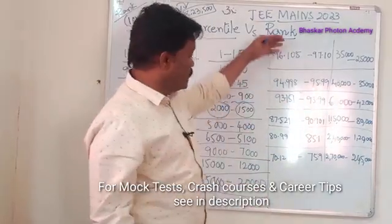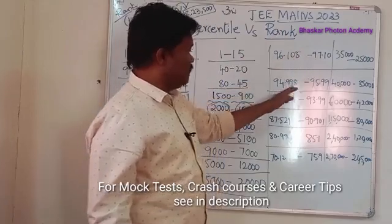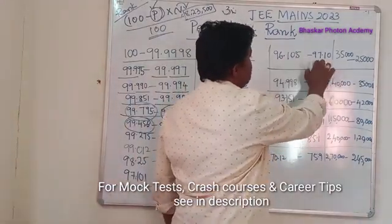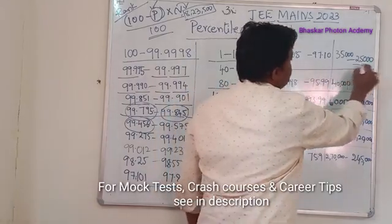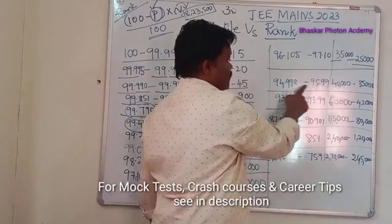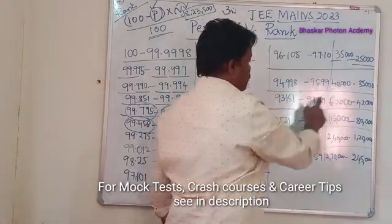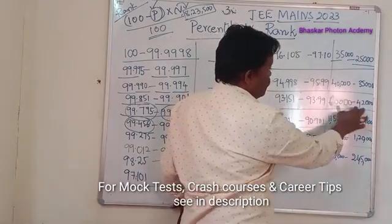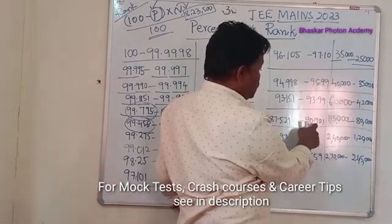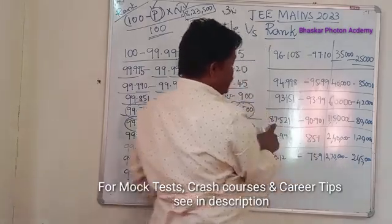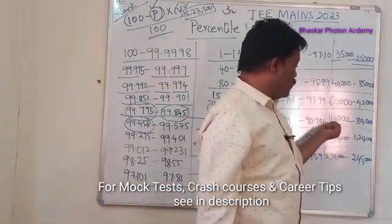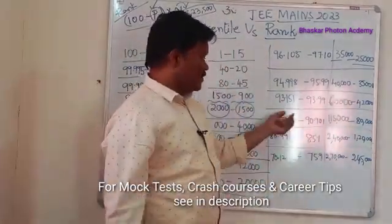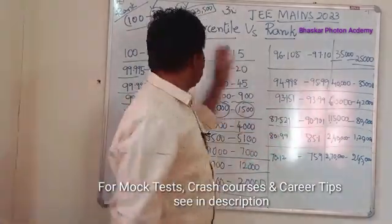For percentile range 97 to 96, ranks are approximately 25,000 to 35,000. Percentile range 96 to 95 gives ranks 35,000 to 40,000. Percentile range 94 to 93 gives ranks approximately 40,000 to 60,000. Percentile range 90.9 down to around 87.5 gives ranks approximately 80,000 to 1 lakh, and possibly up to 1 lakh 10 thousand depending on the number of candidates. These figures are dynamic.